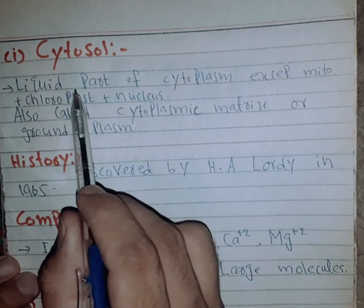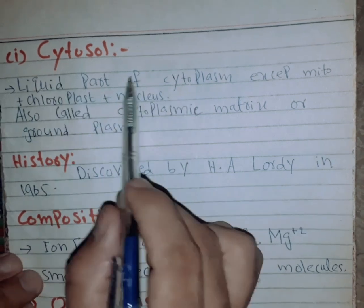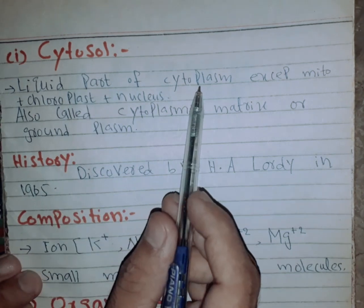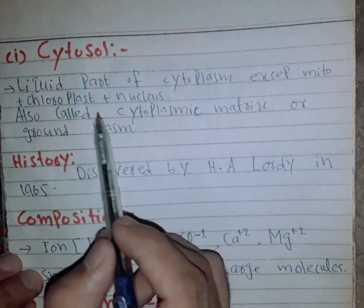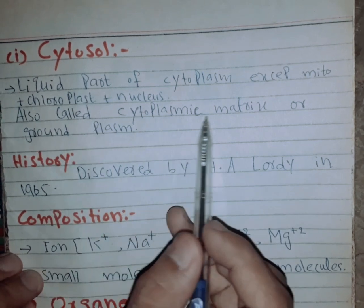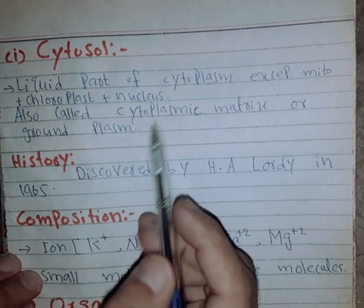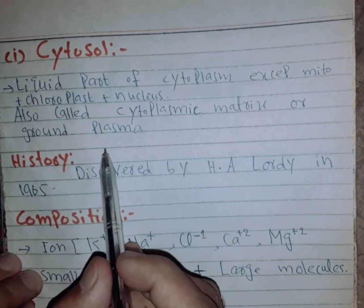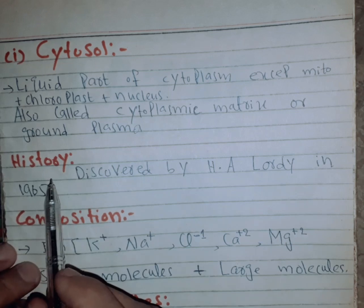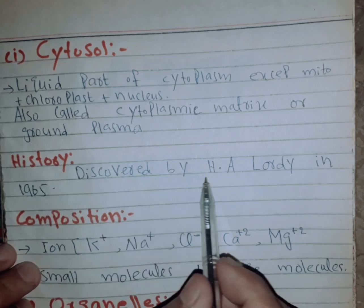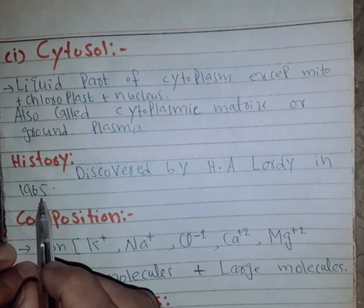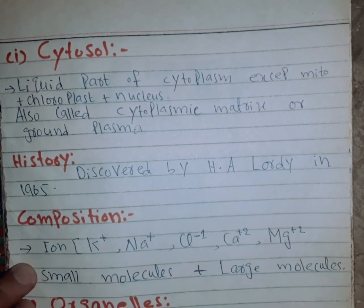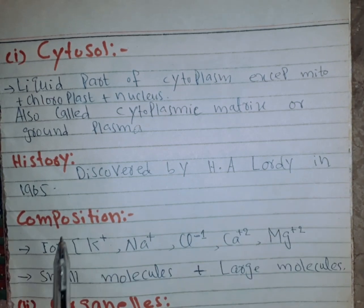The liquid part of the cytoplasm is called cytosol. Cytosol is also called the cytoplasmic matrix or ground plasma. Cytosol was discovered by H.A. Lardy in 1965.